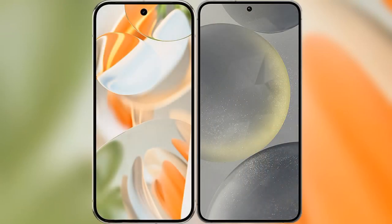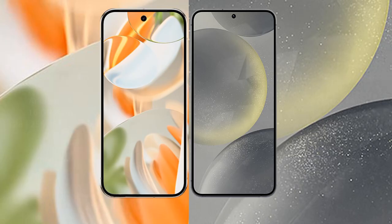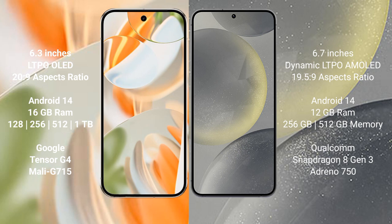I will compare the new Google Pixel 9 Pro with Samsung Galaxy S24 Plus. Google Pixel 9 Pro has a 6.3-inch LTPO OLED display with a resolution of 1080x2424. Samsung Galaxy S24 Plus has a 6.7-inch dynamic LTPO AMOLED display with a resolution of 1080x2340.